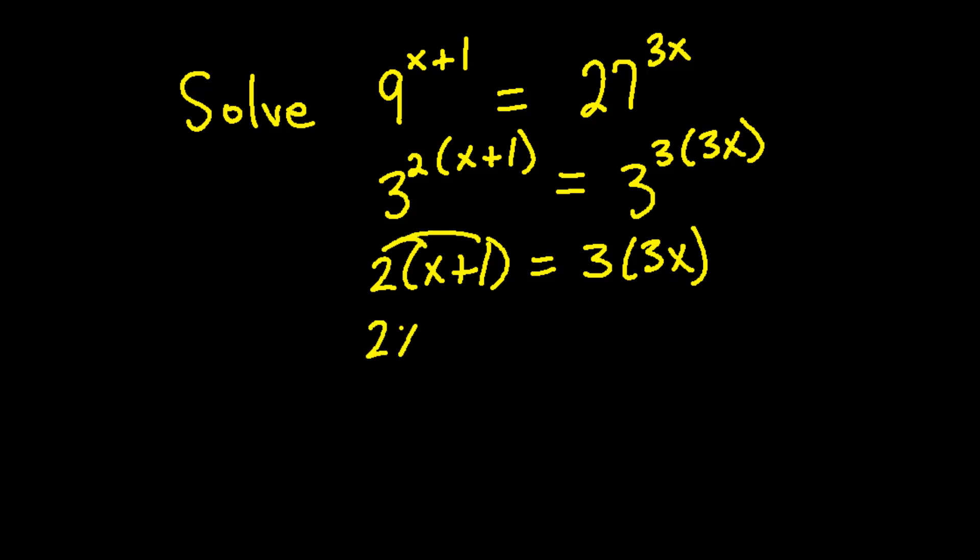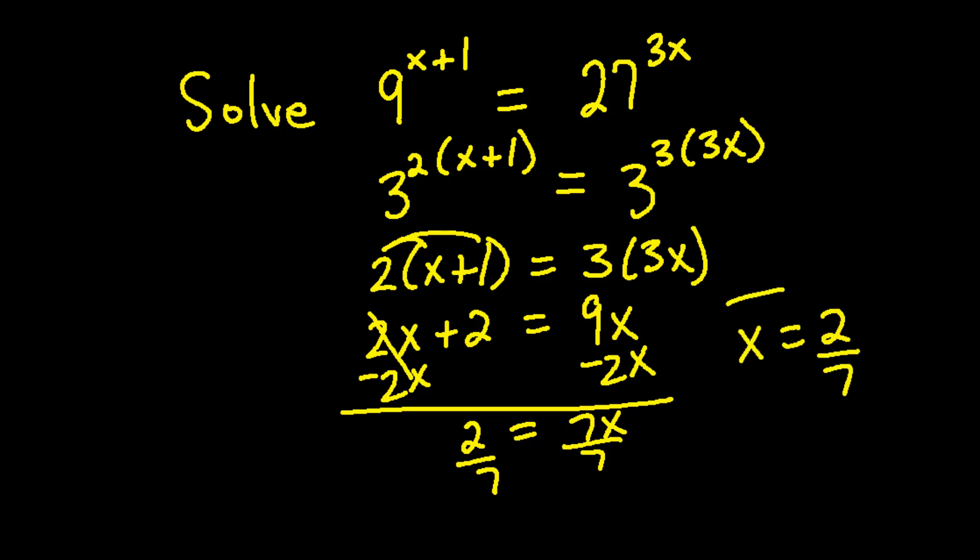Distributing the 2 we get 2x plus 2 equals, and the right side is 3 times 3x which is 9x. We can then move the x terms all to one side by subtracting 2x, and 2 equals 7x. Dividing both sides by 7 we get the final answer which is x equals 2 sevenths.